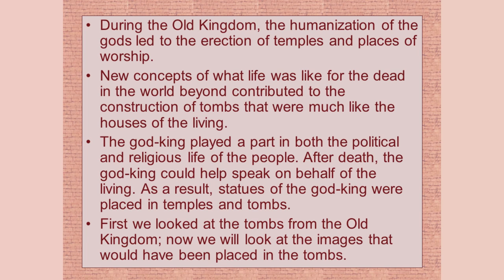In the Old Kingdom, the Egyptian gods begin to get humanized. Animals always remain important, but in the Old Kingdom they start really getting humanized — and when they're humanized, they begin building temples, places of worship, and developing new concepts of what life is like for the dead in the world beyond. This contributed to the way they constructed tombs, and the tombs are a lot like the houses of the living.